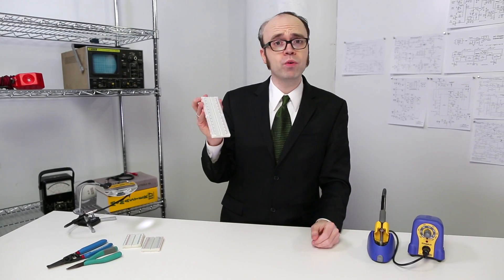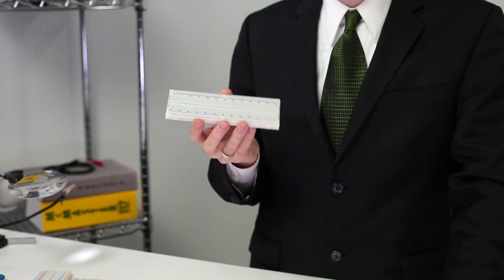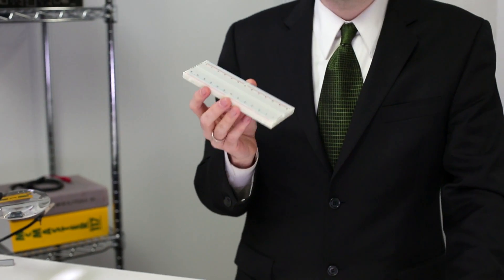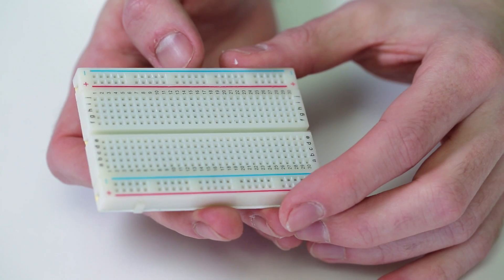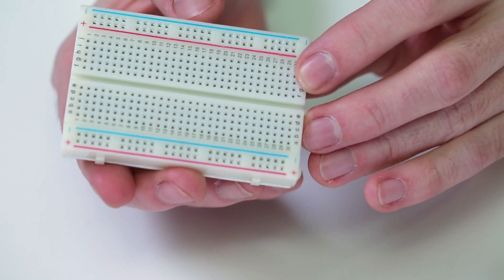Like, say, a breadboard, for example. Breadboards offer the most flexible way to assemble a circuit. Build it, change it, scrap it. All good. Breadboards don't mind at all. And that's because they don't require any soldering.